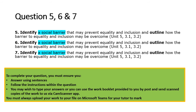Questions five, six and seven are all structured the same way. For each one, identify a social barrier that may prevent equality and inclusion, then outline how that barrier may be overcome. There are three social barriers in total — one for question five, one for question six, and one for question seven.